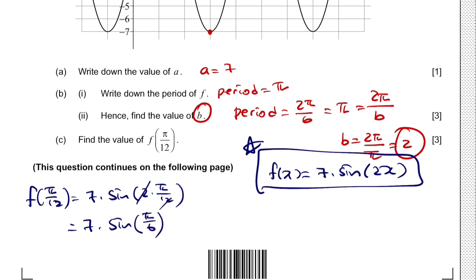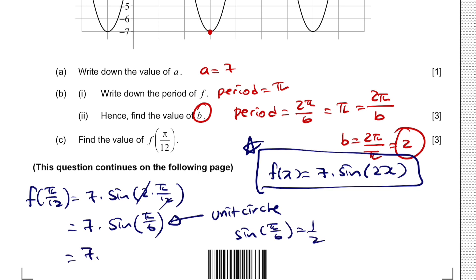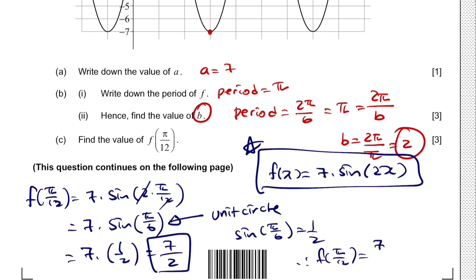Using the unit circle, we know that sin(π/6) = 1/2. So f(π/12) = 7 × 1/2 = 7/2.